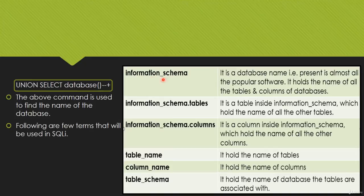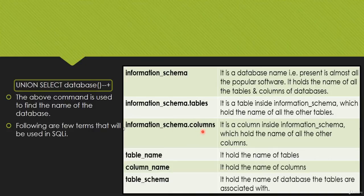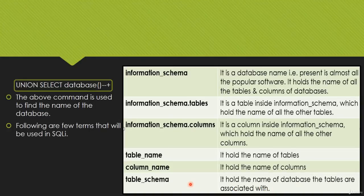After finding table and column names, the key resources are: information_schema — a database present in almost all popular SQL software that holds names of all tables and columns. information_schema.tables holds names of all tables. information_schema.columns stores names of all columns. table_name holds the table name, column_name holds the column name, and table_schema holds the name of the database the tables are associated with.